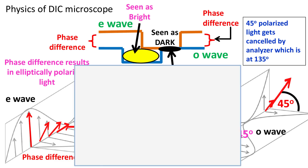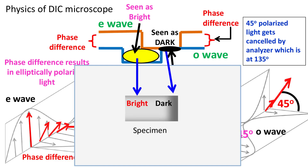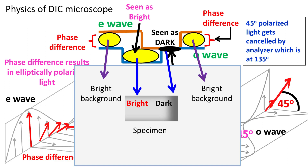So there we have it — one end of the specimen is seen as bright and the other end is seen as dark. It appears that the image of the specimen is three-dimensional, but in reality that's not the case, as lots of physics is involved. Besides the specimen, the wavelengths coming from the background also show a phase difference, so the background observed will also be bright.